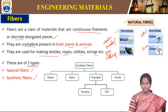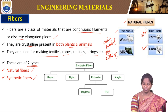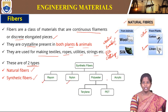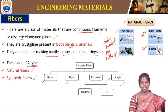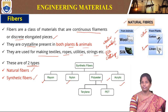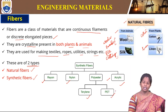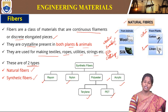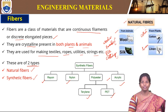Synthetic fibers are of four types: rayon, nylon, polyester, and acrylic. In polyester, there are two different types: terylene and PET. These are the synthetic fibers that are man-made or modified natural fibers.